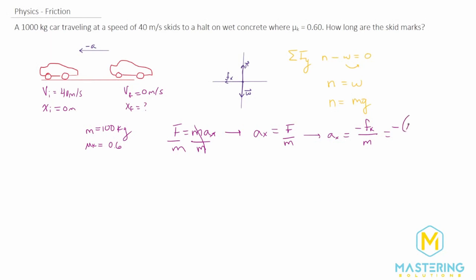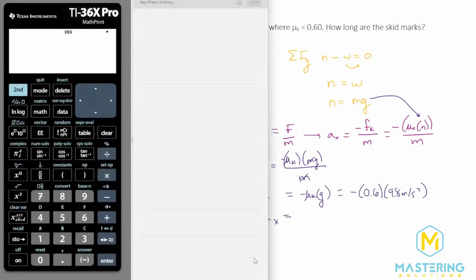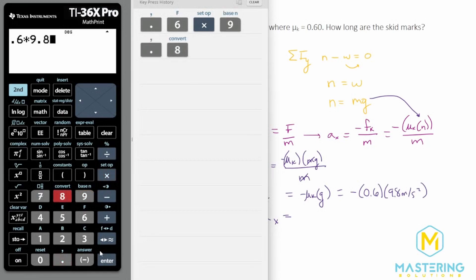We have negative mu sub k times the normal, divided by the mass. Since we found that normal equals mg, we substitute that in: a sub x equals negative mu sub k times mg divided by m. The mass on the top and bottom cancels out, so the final equation is a sub x equals negative mu sub k times gravity. Plugging in our values: negative 0.6 times 9.8 meters per second squared.